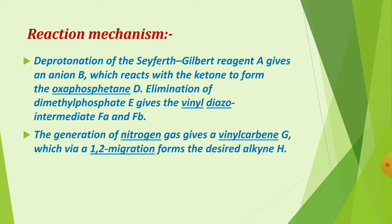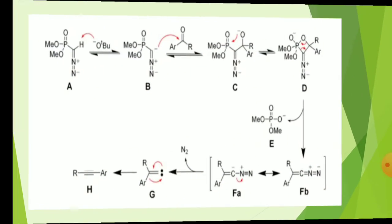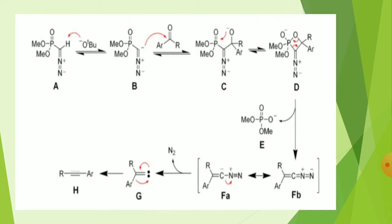Via a 1,2-migration, the vinyl carbene forms the desired alkyne product (H). In direct mechanism terms: first, deprotonation occurs — hydrogen is removed — then attack on the ketone carbonyl takes place, followed by C-C bond formation.